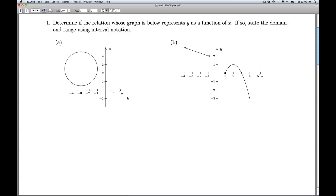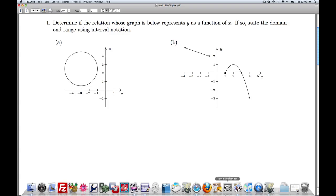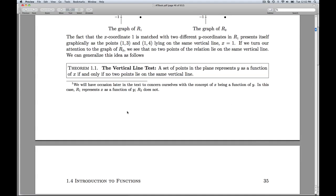So the principal tool we have to check the function condition graphically is the vertical line test, which we have here, Theorem 1.1. A set of points in the plane represents y as a function of x if and only if no two points lie on the same vertical line. So another way to say this is that if you can find a vertical line that crosses the graph more than once, it does not represent y as a function of x.